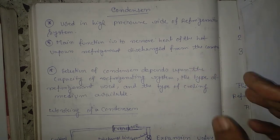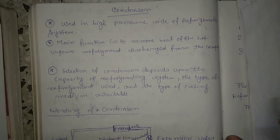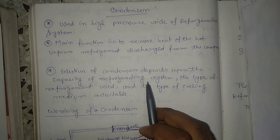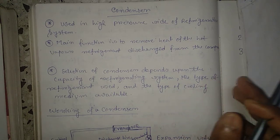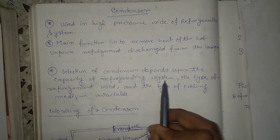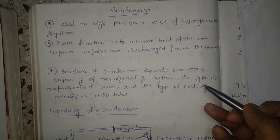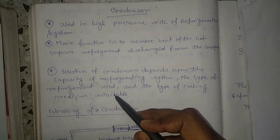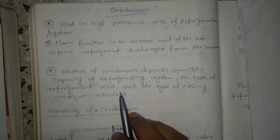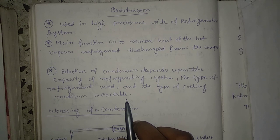To summarize the introduction: the main function of the condenser is to remove heat from the hot vapor refrigerant discharged from the compressor, and it is used in the high pressure side of the refrigeration system. The main selection factors are: capacity of the refrigerating system (one ton, two ton, three ton, etc.), type of refrigerant (R11, R12, R134a), and type of cooling medium.